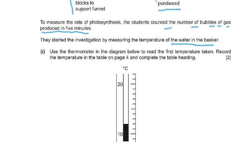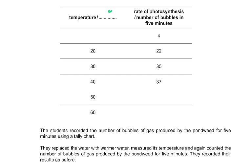Looking at the thermometer: this is 10 and this is 20, with divisions between them - 11, 12, 13, 14, 15, 16, 17, 18, 19, and then 20. The temperature shown is 12 degrees Celsius. So we write degrees Celsius in the heading and 12 in the table. This gets us the two marks.